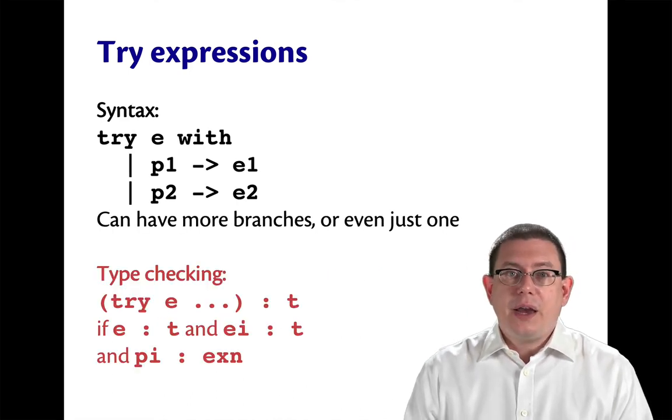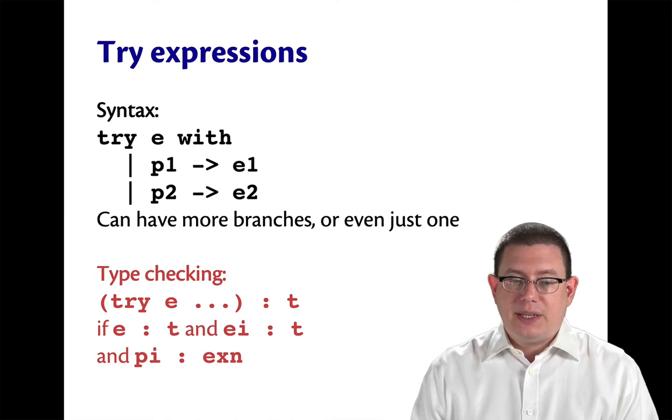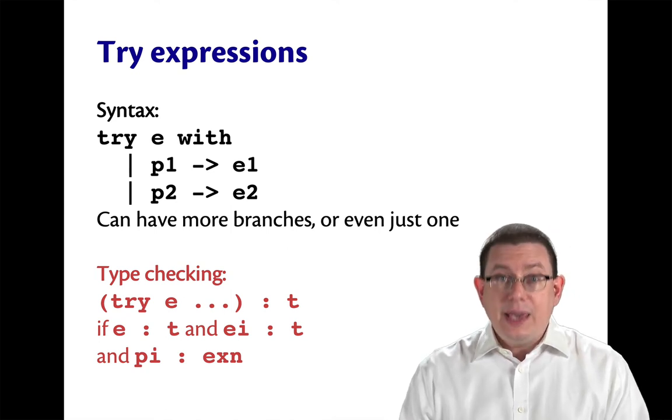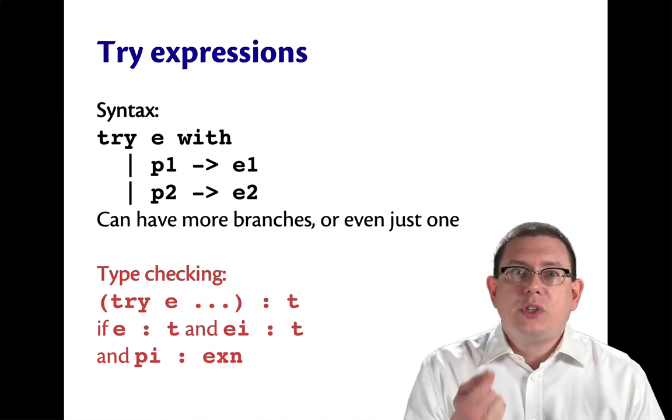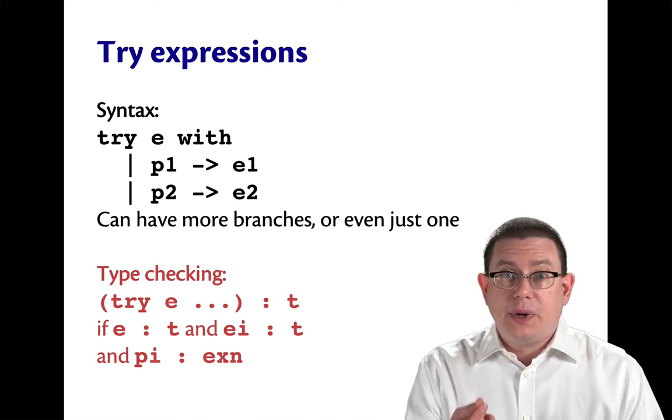As for type checking, the entire try expression has a type t. If e has that type t, why? Because e is what's going to be returned as the result if no exception is raised.